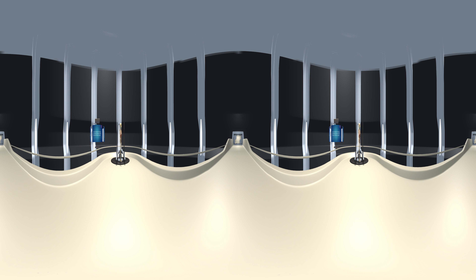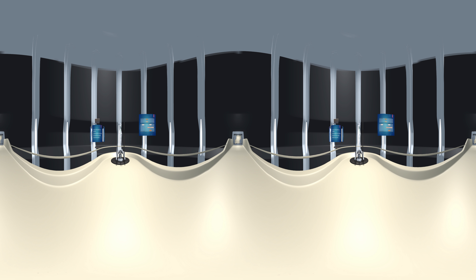First of all, we need to think about how the brain communicates with the body via the nervous system. The nervous system can be divided into two main divisions: the central nervous system and the peripheral nervous system. The central nervous system is composed of the brain and spinal cord, and together this system controls all functions in the body. The peripheral nervous system refers to the parts of the nervous system outside the brain and spinal cord.